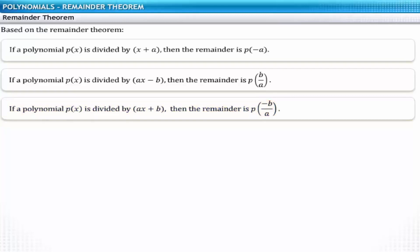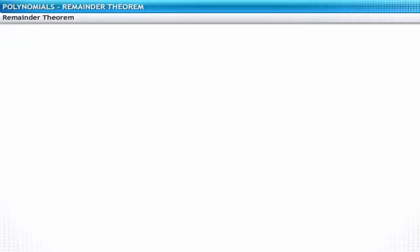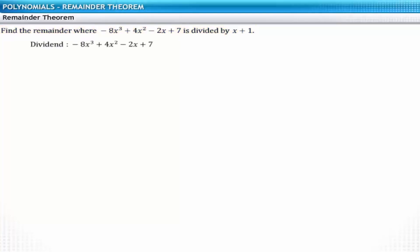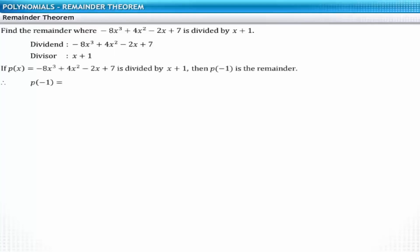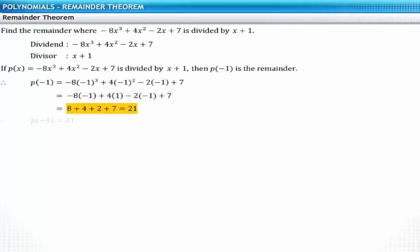Let's apply these guidelines to solve some problems. In the first problem, find the remainder when minus 8x cubed plus 4x squared minus 2x plus 7 is divided by x plus 1. Here the divisor is x plus 1, so the remainder is p of minus 1. Replacing x with minus 1 in the polynomial, the remainder is equal to 21.